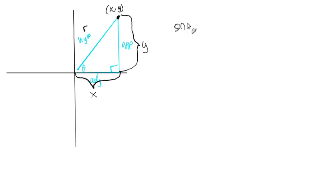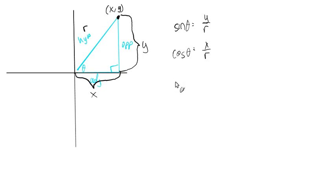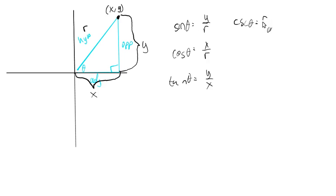So now the sine of this angle is opposite over hypotenuse, which is y over r. The cosine is x over r. The tangent is opposite over adjacent, or y over x. The cosecant is the reciprocal: r over y. The secant is r over x. And the cotangent is x over y.